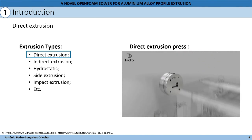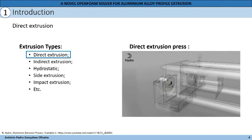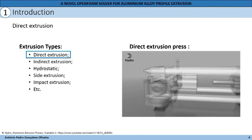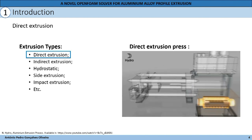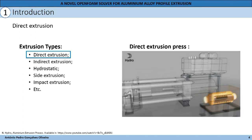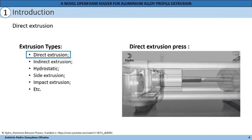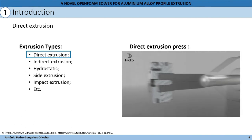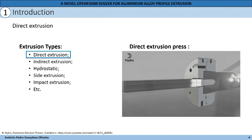Here we are watching the dies which are inserted into the press. Then the material is preheated and also placed into the press. And then there is a ram that forces the material through the die and the profile exits.